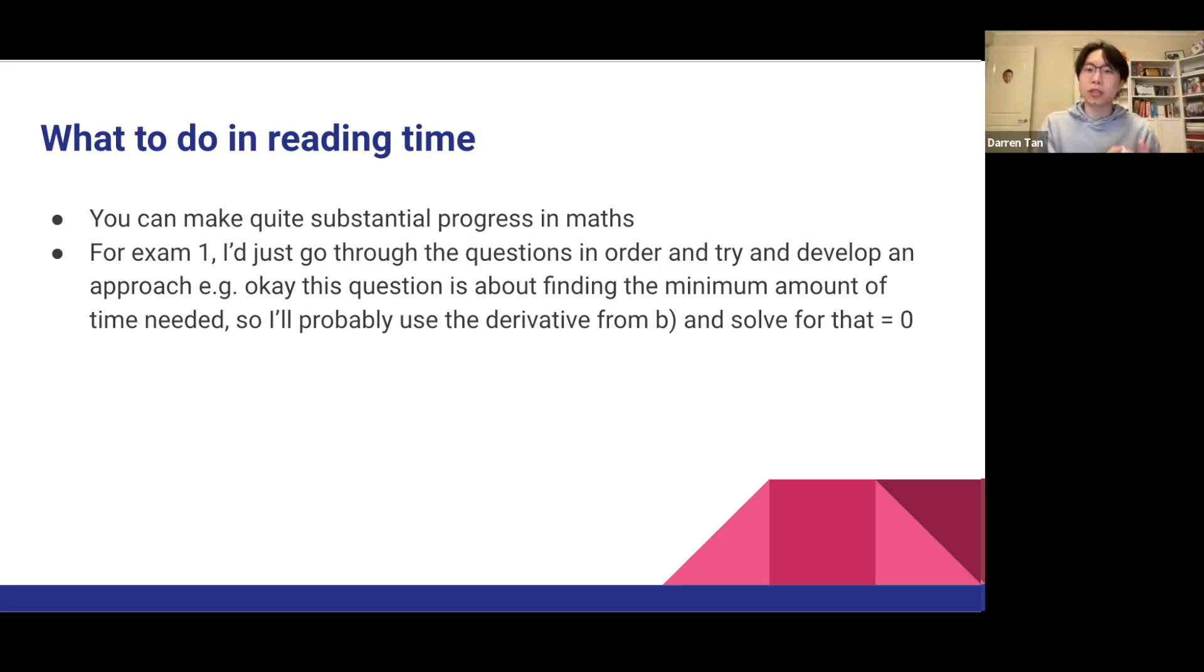For exam one, I just go through the questions in order and try and develop an approach. I would think to myself, what's this question asking? What will I do in the first one to two lines? So I may think, okay, this question is about finding the minimum amount of time needed. So I'll probably use the derivative of part b, and then solve for that equals to zero. And that will probably result in some kind of answer. I usually don't like working with numbers too much during reading time, just because there's a chance of messing up the numbers when you have them all in your head.